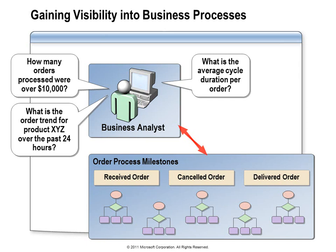If we instructed the component that receives an order for processing to report the time it received an order, and then instructed any components that complete processing to report the completion time, then we could rely on BAM to calculate the duration of each of those order processes, and we could query for the average, maximum, or minimum duration. If we instructed a component to report the product IDs included in every order, we could query BAM to find how many times a given product has been ordered in a specific time period, such as the last 24 hours. We can also define milestones within our process and get sophisticated queries such as the average duration for orders for a given product delivered in the past 24 hours.